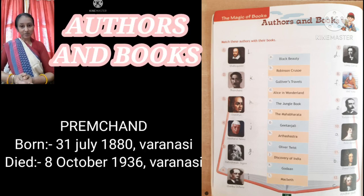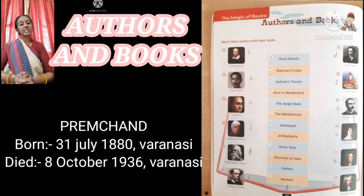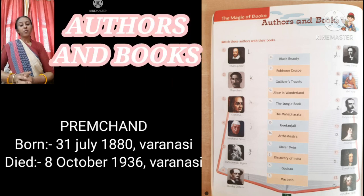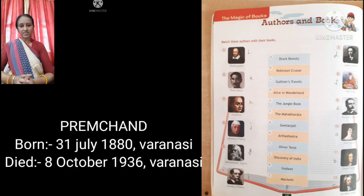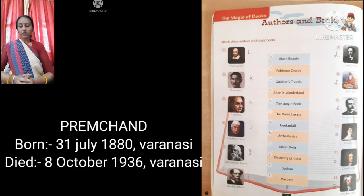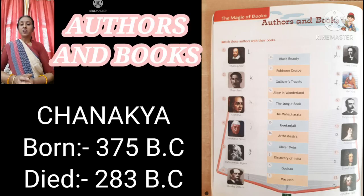The next one is Premchand. Premchand is an Indian writer, and he is a famous Hindi writer of the early 20th century — a very famous personality. He was born on 31st July 1880 in Varanasi and died on 8th of October 1936 in Varanasi also. The name of his book is Godan.